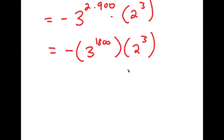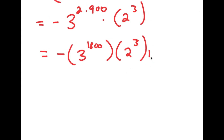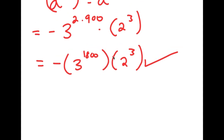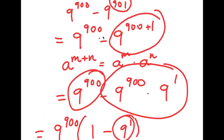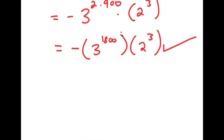So this is our answer in its most simplified form: negative 8 times 3 to the power of 1800. If you want, you can try putting in 3 to the power of 1800, but that number is way too big for any calculator to output, so this is the simplest form we can express our answer in. That is our answer to 9 to the power of 900 minus 9 to the power of 901.